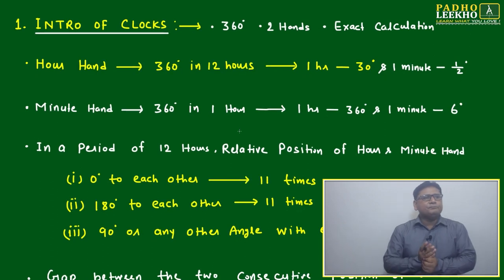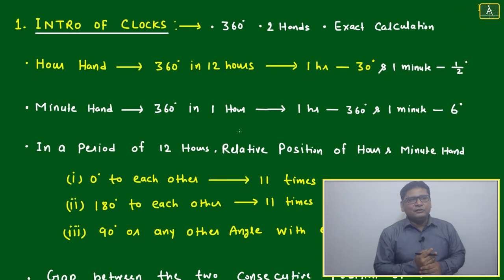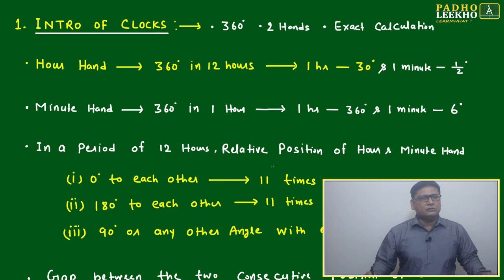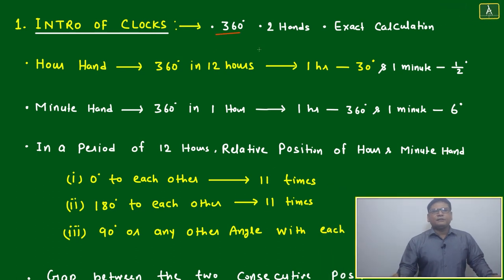Now we'll try to understand the facts and mathematical figures related to introduction of the clock. 360 degrees - we know if anything is rotating in a circle it is 360 degrees. Two hands - we are not considering the second hand here.